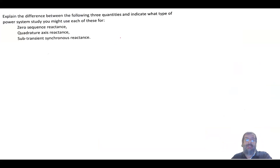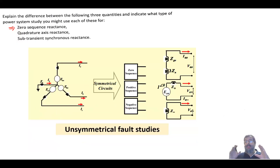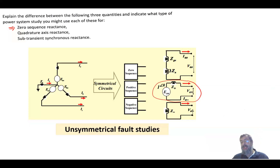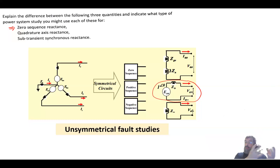We'll start with the zero sequence reactance. Under steady-state studies, we use a model with a voltage supply in series with the synchronous reactance — sometimes with a resistance, but most of the time we ignore it for power system studies. This is for steady-state analysis, which could be for load flow or symmetrical faults where the system is balanced. In that case we use only what we call the positive sequence.